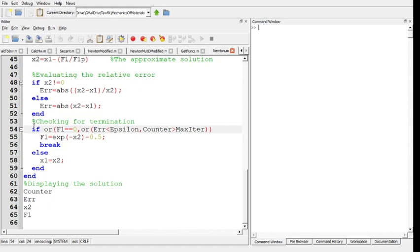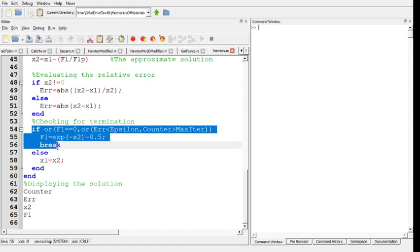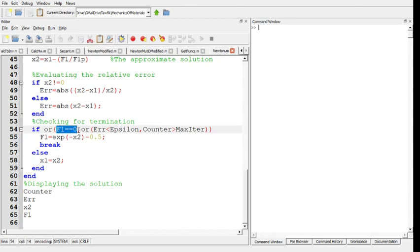Now I'm checking whether I'm going to end the loop or not. If the function is zero, if you're extremely lucky, then done, break. You're okay. If it's not, then is the error less than the tolerance? If yes, again, break.